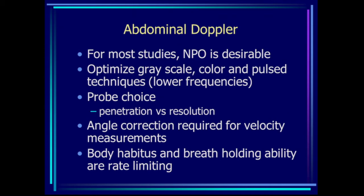Probe choice is important, and as with every study in ultrasound, we always have to play penetration versus resolution against one another. For abdominal Doppler work, we really need penetration and low frequency to get good pulsed Doppler evaluation of the vessels. Whenever you're using Doppler to assess velocities, angle correction is required and should be under 60 degrees. The rate-limiting step in abdominal Doppler work is often patient body habitus and breath-holding ability.